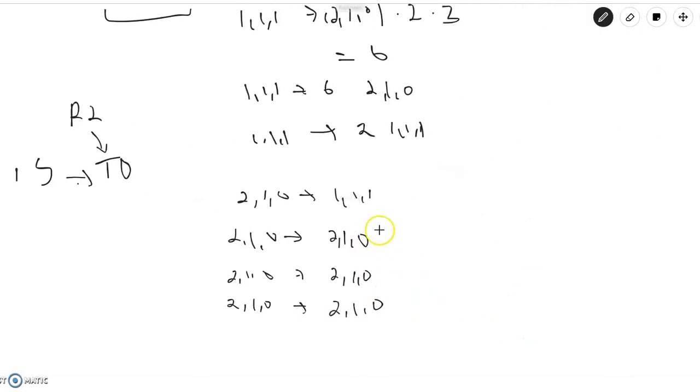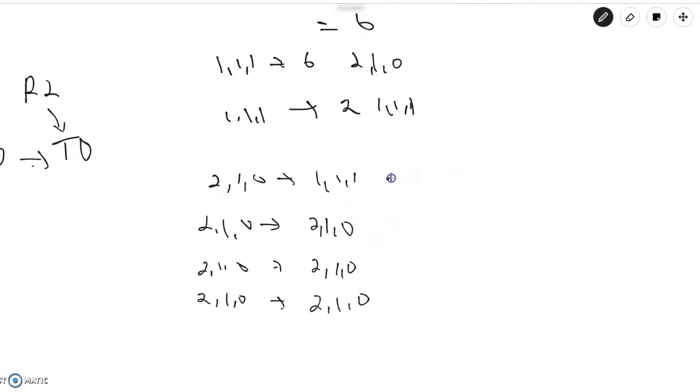So in this case, there's basically one way to go from 2, 1, 0 to 1, 1, 1. And then there's three ways from 2, 1, 0 to go back to 2, 1, 0. So this is three and this is one.